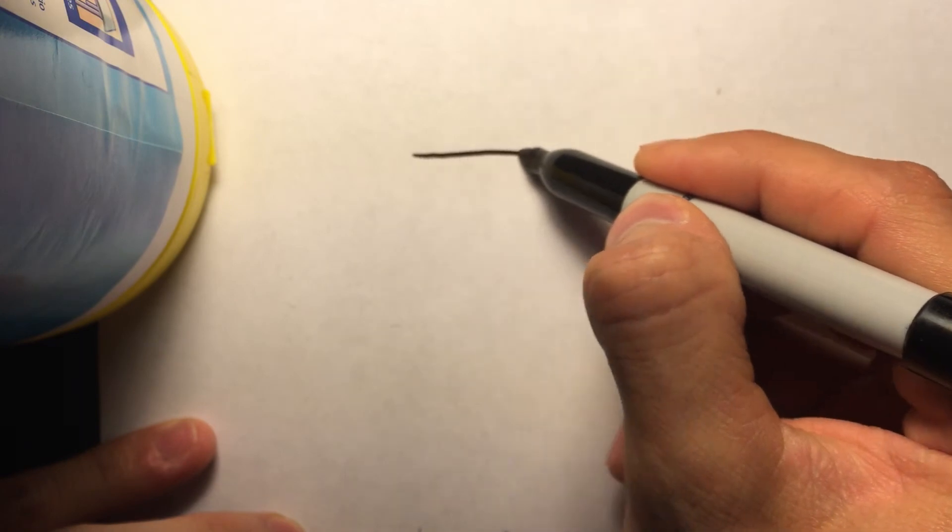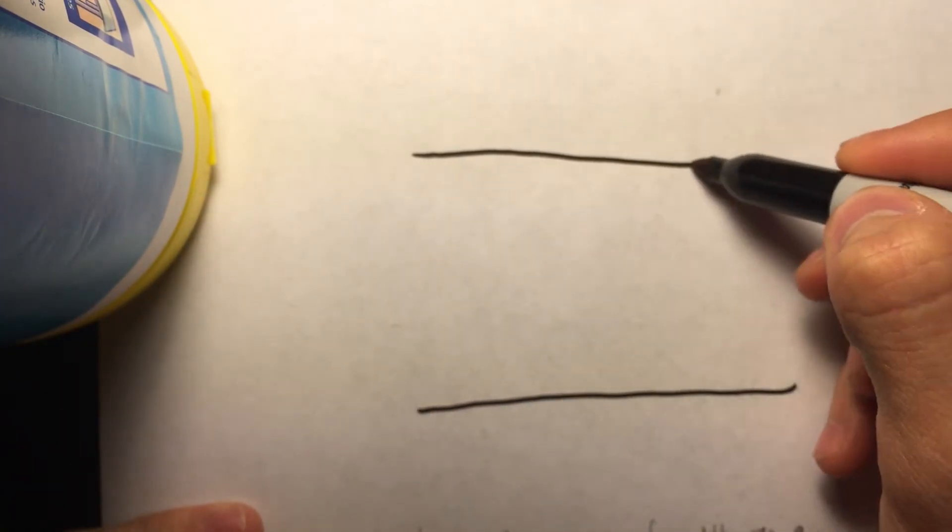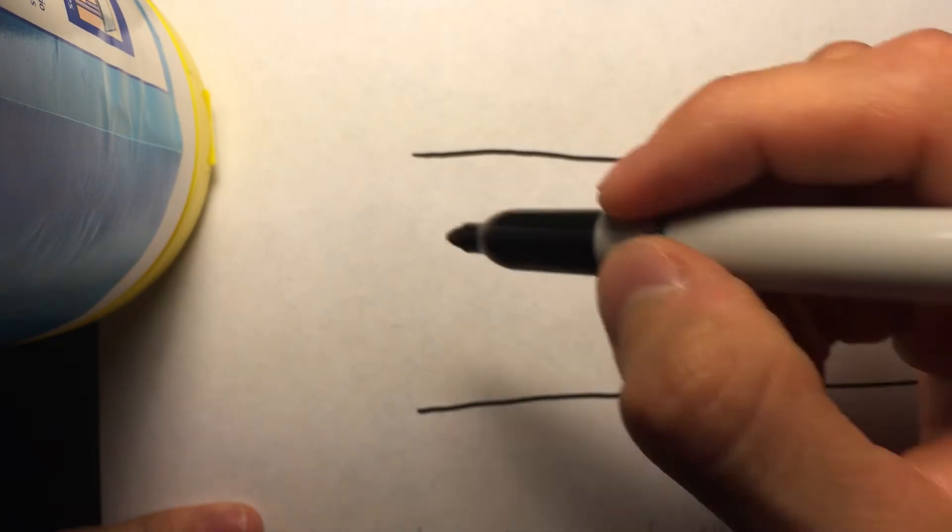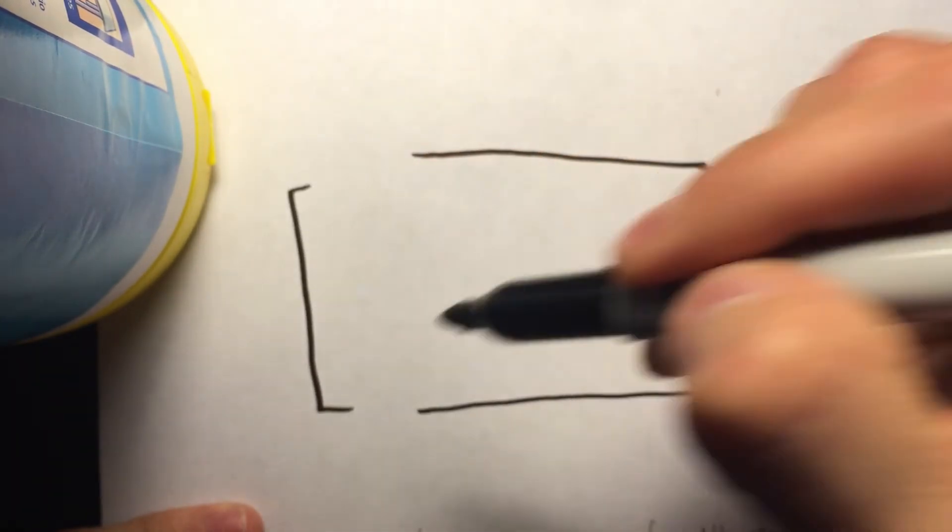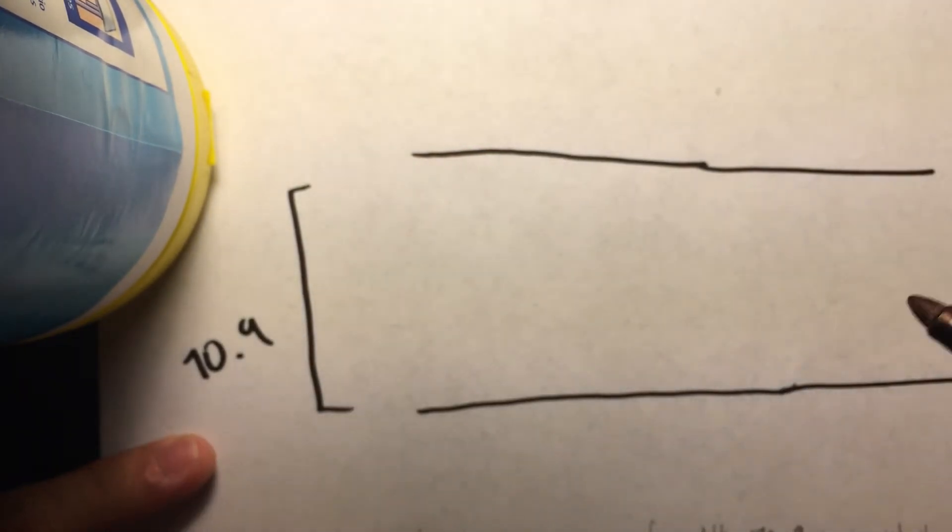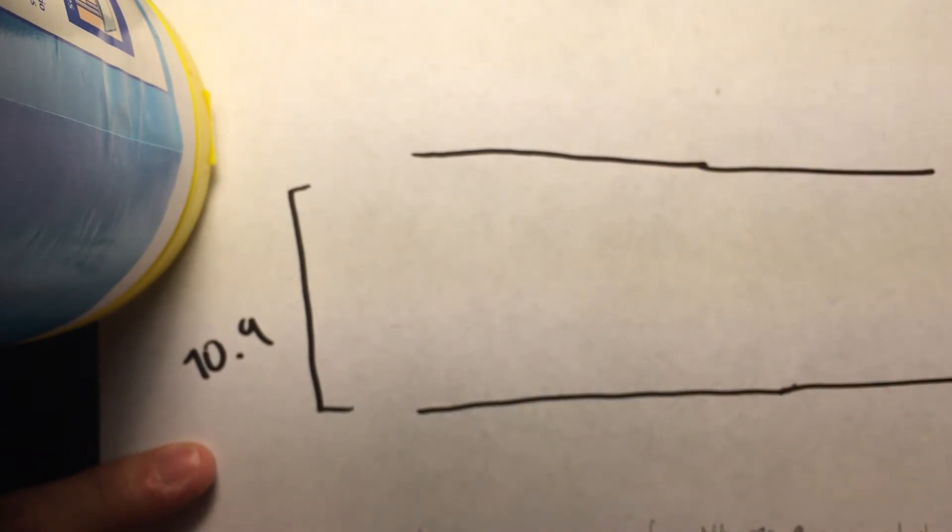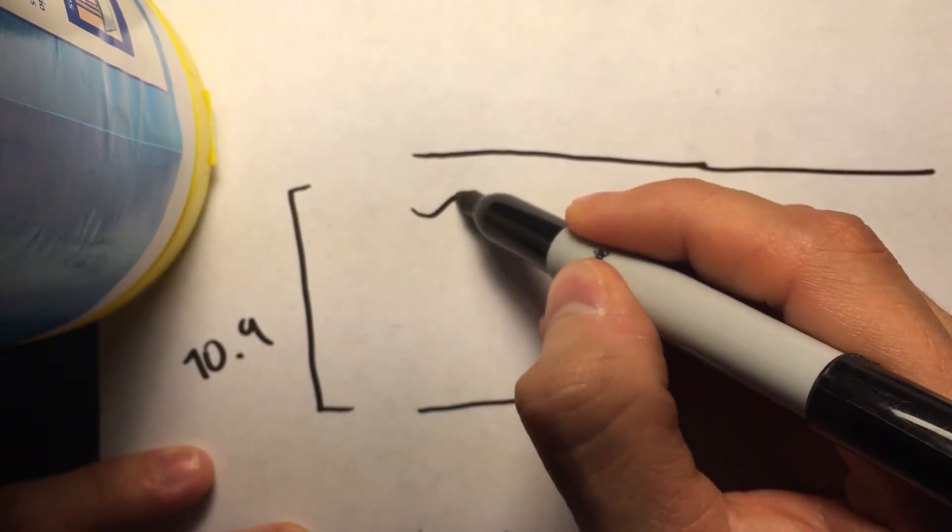It says that a boat crosses a river of width 70.9 meters. So, we have our river. And the width is 70.9, right? So, we have a current, which we can make it go this way or this way. In this scenario, I'm going to make it go down.